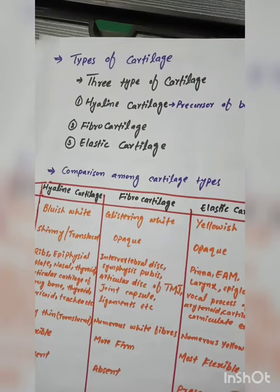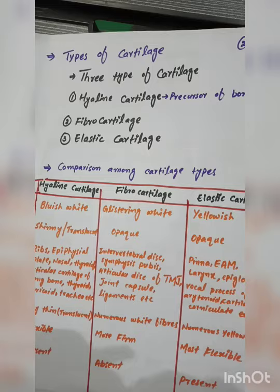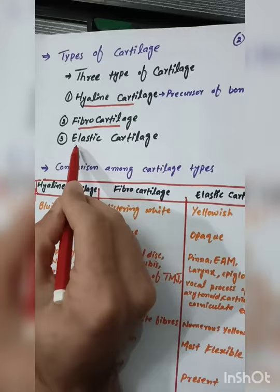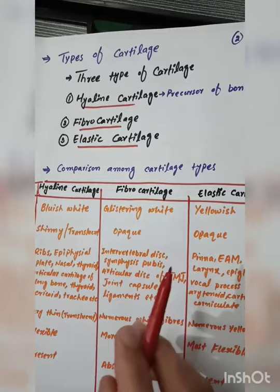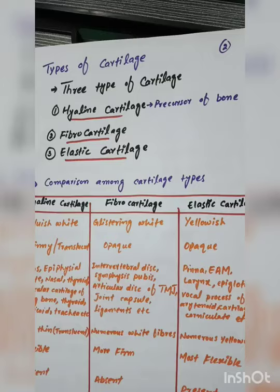The three types of cartilage are: hyaline cartilage, fibrocartilage, and elastic cartilage.